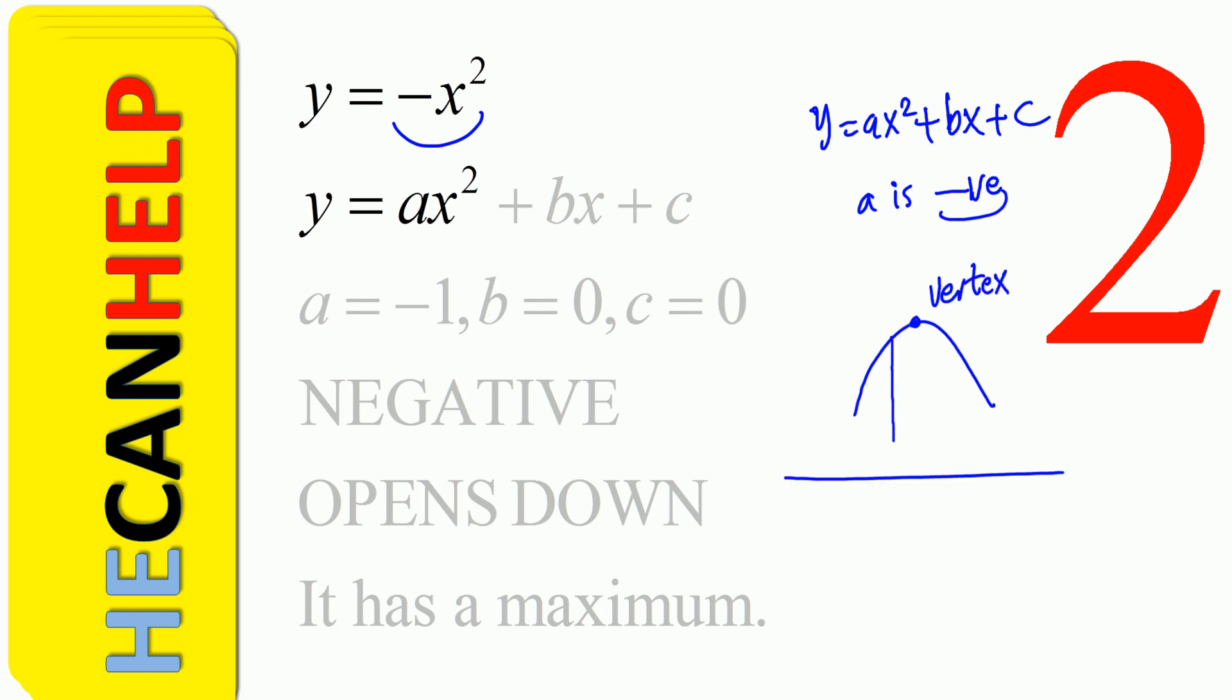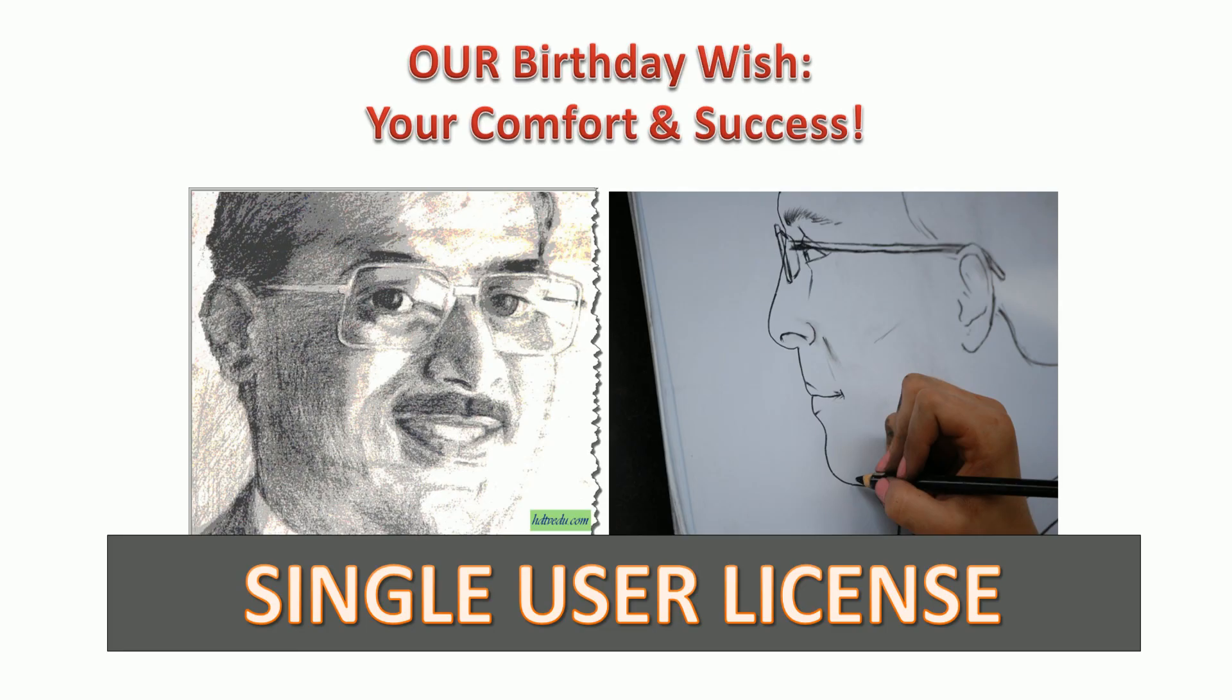So if a is negative, the graph opens down and we have a maximum and that is also called the vertex. Why is that the maximum? Because when you go to the left or to the right we have a smaller y value. For our case, the graph opens up. a is positive. Hey, this is George Matthew. Good luck!